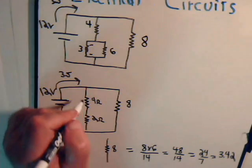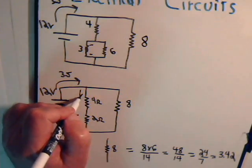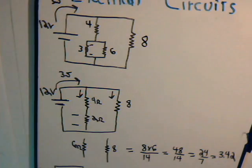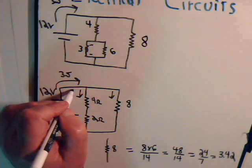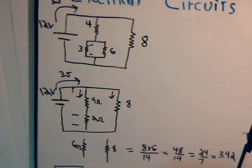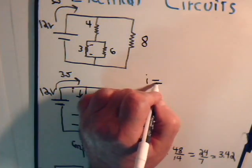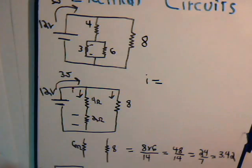And this 3.5 amps is going to be split to a current going into here and a current going into here. Now, by the current divider principle, the current that's coming in here, and this is what we did I think in the second video, when you have two resistors in parallel and you have a current that's being split between them.